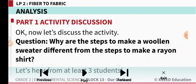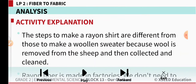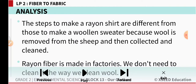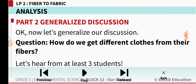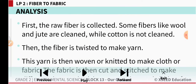Why are the steps to make a woolen sweater different from the steps to make a rayon shirt? The steps are different because wool is removed from the sheep and then collected and cleaned, whereas rayon fiber is made in factories and we do not need to clean it the way we clean wool.